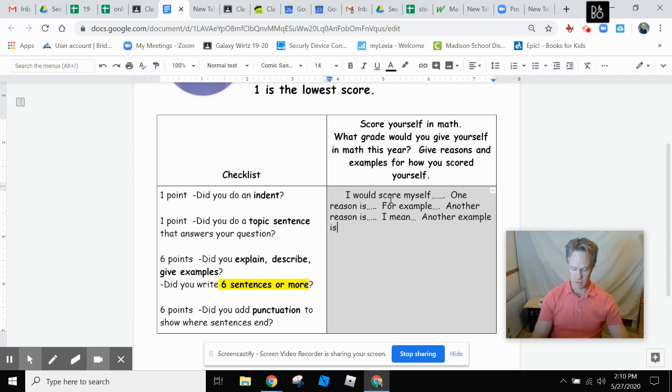Another example is. Give another example. Give another reason. And in the end, you can do a conclusion sentence. A conclusion sentence tells the reader you are done with your paragraph. It also reminds the reader what your paragraph was about.